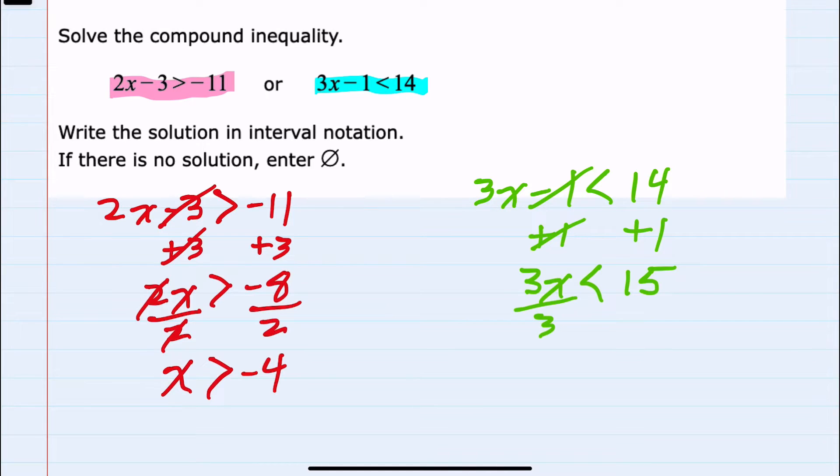Isolating the x, I would need to divide by 3. And since I'm dividing by a positive, the direction of the inequality again stays the same. 15 divided by 3 is 5. So I have simplified the second inequality.